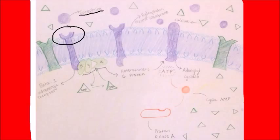Anyway, this binding causes the activation of a heterotrimeric G protein, which contains three subunits: alpha, beta, and gamma. You can see this G unit right here.